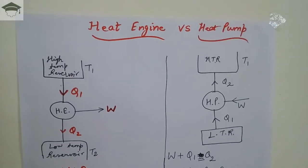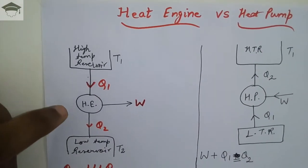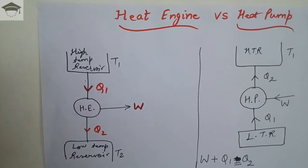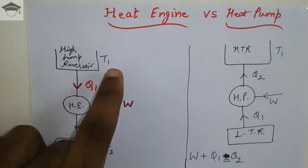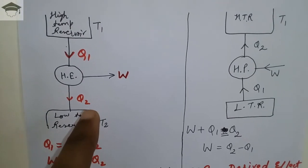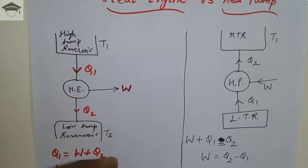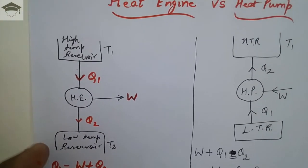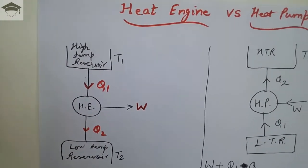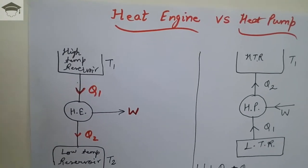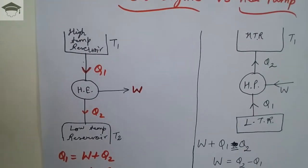First I will explain the heat engine. This is the high temperature reservoir — this symbol denotes a heat engine. A heat engine is a device that takes heat from a high temperature reservoir at temperature T1, rejects heat Q2 to a low temperature reservoir at T2, and produces an output work. An example of a heat engine is a general automobile engine, where fuel is consumed and the desired output — work — is obtained.